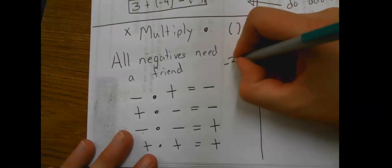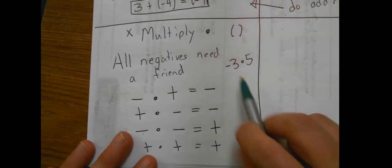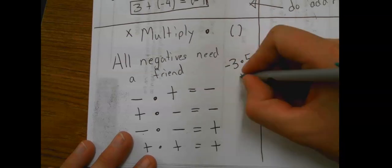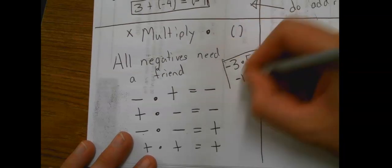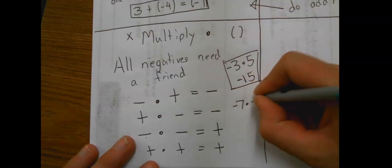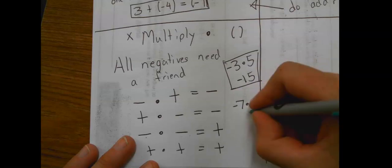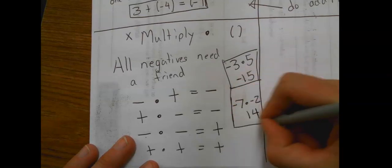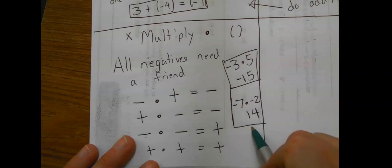An example of that would be negative three times five. Three times five is fifteen. The negative needs a friend, so the answer is negative fifteen. Negative seven times negative two. Negative times negative is a positive. Fourteen, because these two are friends, that's a positive thing.